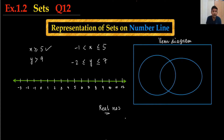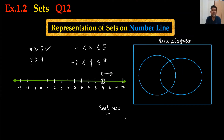Now Y is greater than 9. Where is 9? 9 is here. So I will draw a circle but I will not fill it, and I will draw the arrow to the right — greater than. This means 9 is not included, but all values after 9 — it can be 9.0001, whatever — all values after 9 are included in this part.